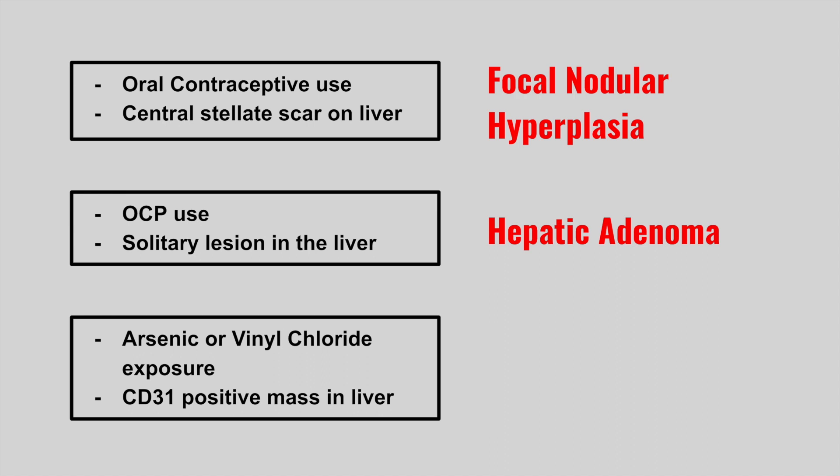The next patient has a history of arsenic or vinyl chloride exposure and there is a CD31-positive mass in the liver. This is hepatic angiosarcoma.